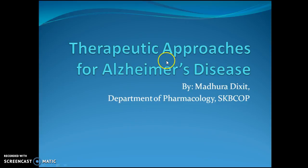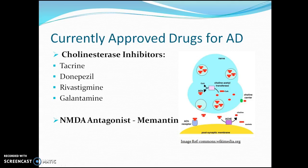We will be talking about therapeutic approaches for Alzheimer's disease. This talk is strictly about approved drugs for Alzheimer's disease. There are five approved drugs: four cholinesterase inhibitors — tacrine, donepezil, rivastigmine, and galantamine — and one NMDA antagonist, memantine.